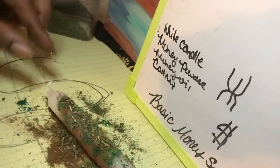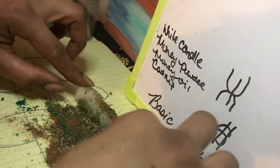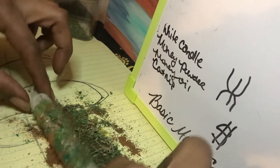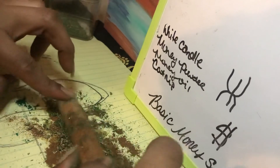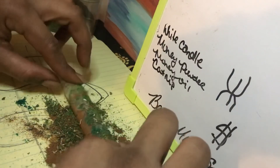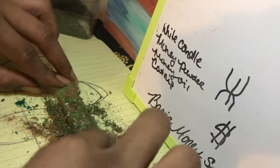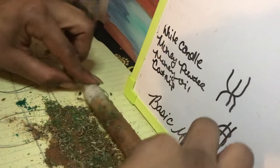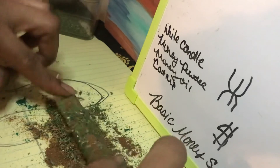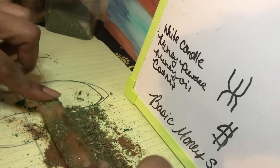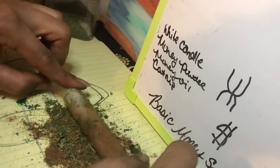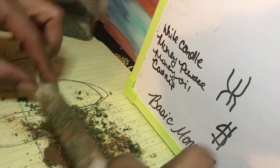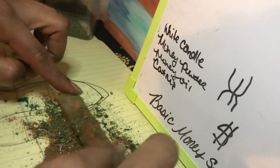Then on that piece of paper, we're going to roll the candle — roll it onto all your ingredients to make sure everything sticks. Try to get as much to stick to your candle as possible, rolling it towards you, calling the money in. Focus on your intention — it's all about intention.